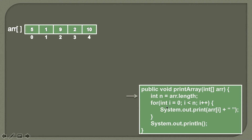In the first step, what we do is we take out the length of the array and store it in an integer variable n. Here, as the array holds five elements, when we do array.length, the value five will be stored in n. So the value of n is five.